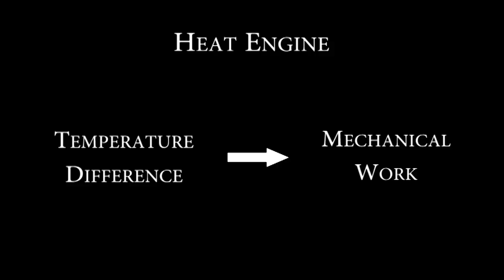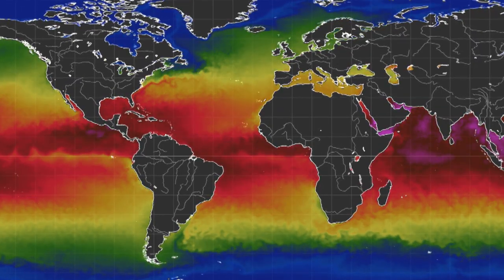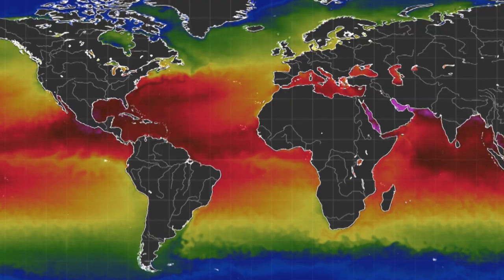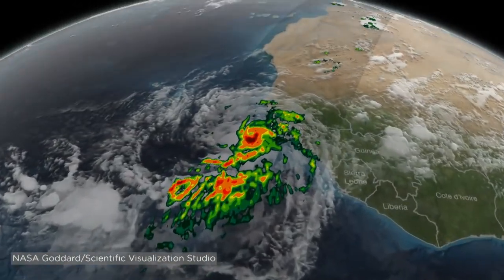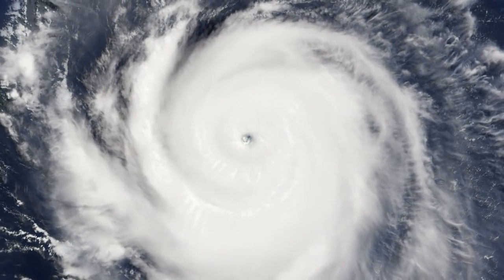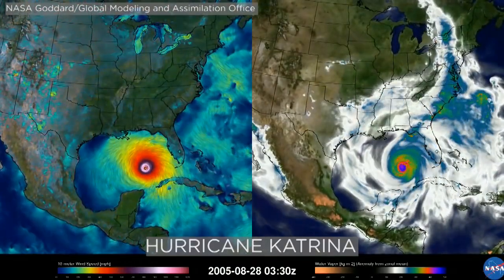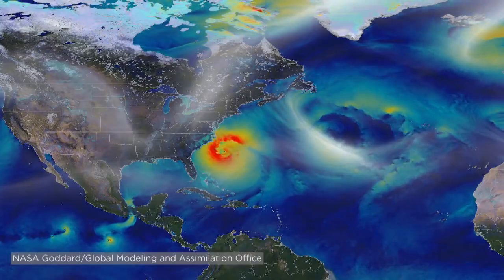Heat engines occur in the natural world. Every summer, the sun beats down in the Atlantic Ocean and the ocean gets hotter. A temperature difference develops between the ocean and the air above. Temperature differences can lead to mechanical motion or in this case wind. This is how hurricanes form. A hurricane is a gigantic heat engine.